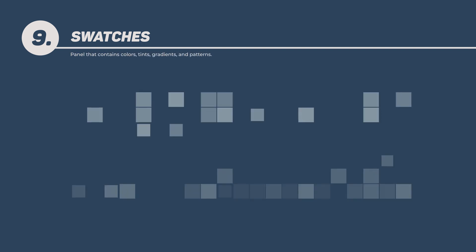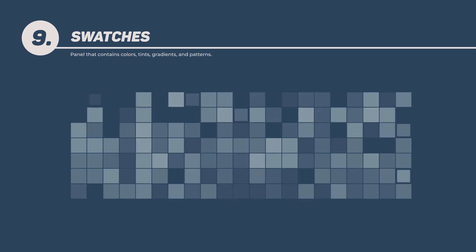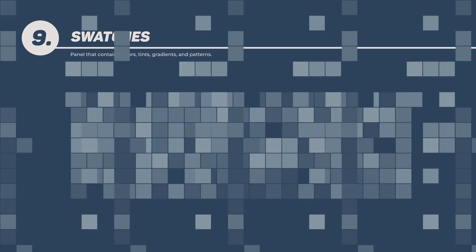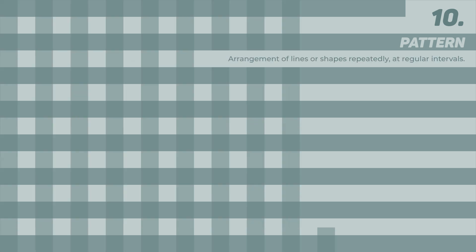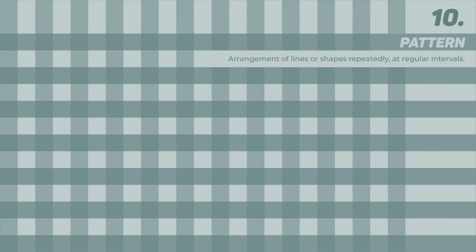Swatches — a panel that contains colors, tints, gradients, and patterns. Pattern — an arrangement of lines or shapes repeatedly, at regular intervals.